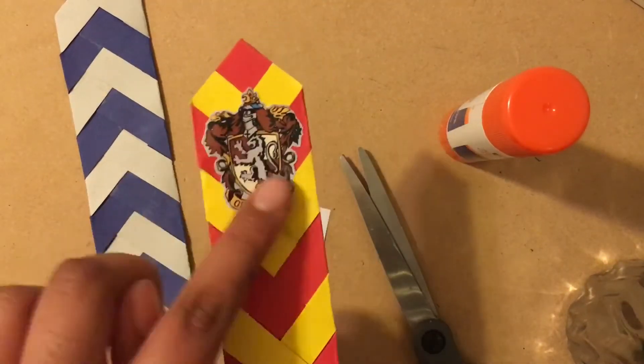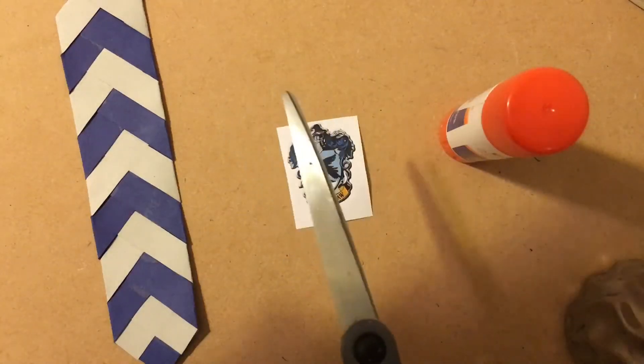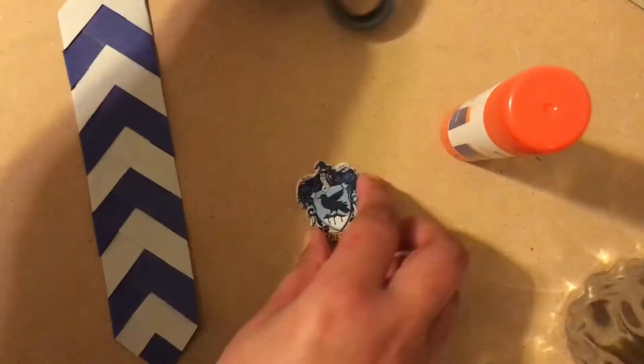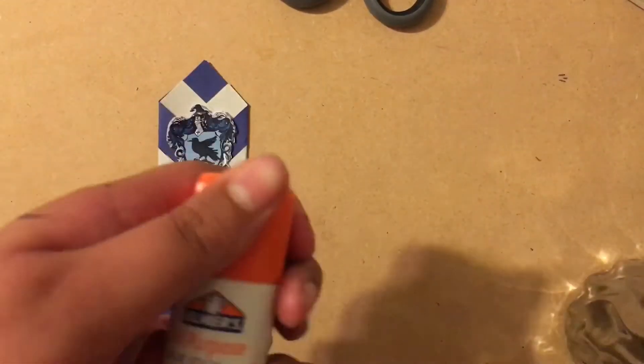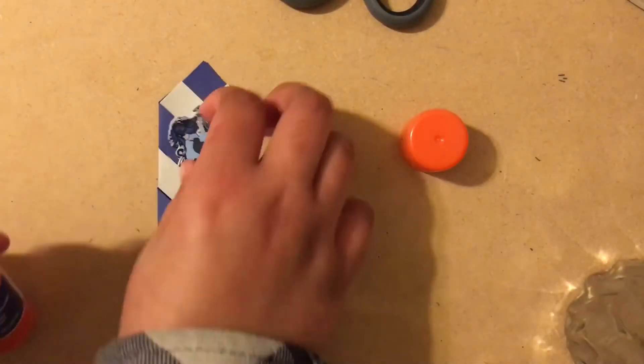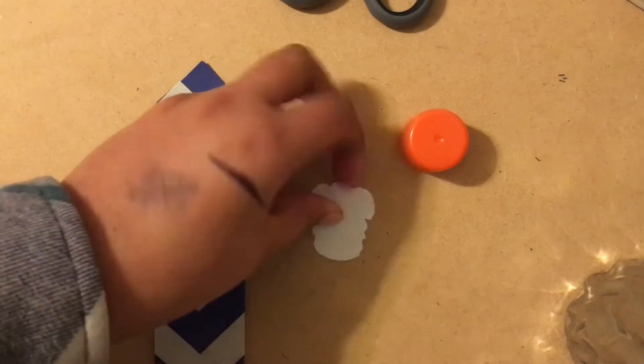Now we're going to do the next part, which is a little optional—it's with the house emblem. If you want to add it you can; I wanted to, but you don't need to. Go ahead and cut it out, and then we're going to glue it onto our bookmark.